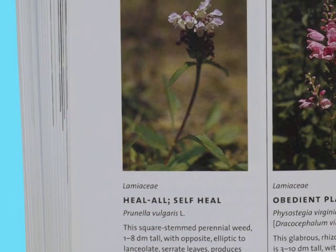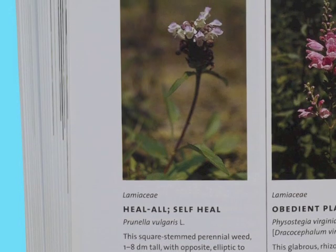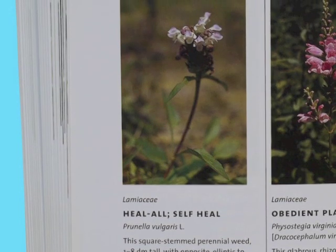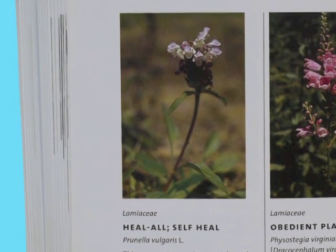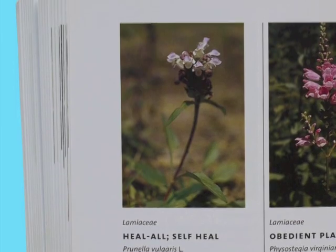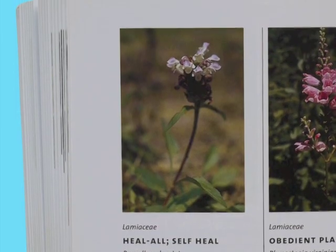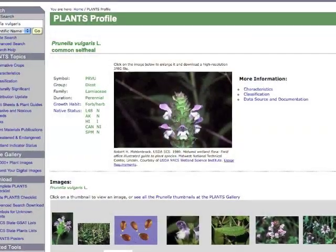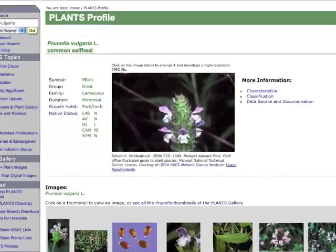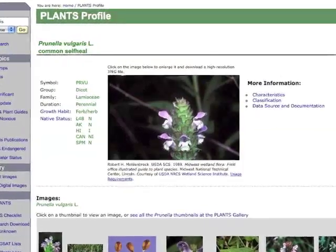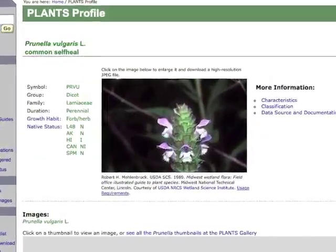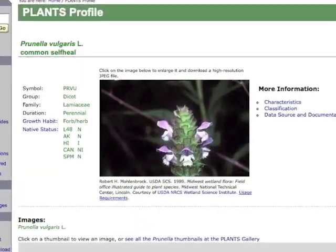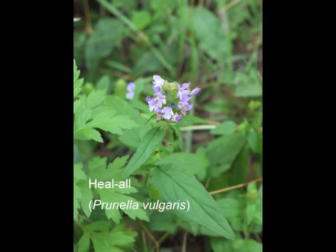However, the flower color is not the same, so we'll want to confirm our identification by looking through other field guides or resources. A search on the USDA Plants Database shows this flower is typically purple. So now we know for sure that this is heal-all, with the scientific name Prunella vulgaris.